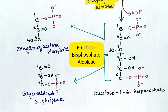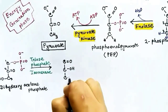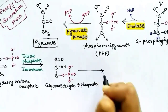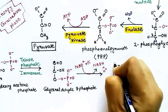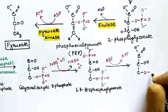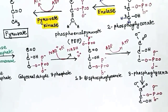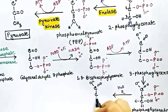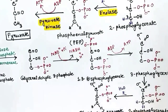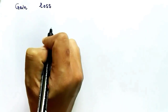Finally, the last phosphate group from PEP is released to form another ATP, by the enzyme pyruvate kinase, and the final molecule is pyruvate. Meanwhile, the dihydroxyacetone phosphate converts into glyceraldehyde-3-phosphate by triose phosphate isomerase and goes through the same glycolysis steps, producing one NADH and two ATPs and another pyruvate molecule. Now let's calculate the gain, loss, and net gain in glycolysis.